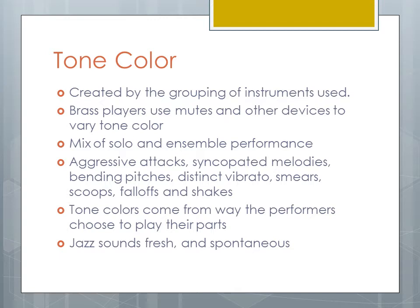Tone color in jazz was really created by the different groupings of instruments used, such as brass instruments. Jazz brass players would use devices such as mutes to vary tone color. They also would mix whether more than one player was playing at a time or whether it was a solo player. Since they mixed solo and ensemble performance so often, how many people would be playing at one time varied in every moment of a piece of jazz. This created an exciting and unpredictable tone color. Other things that dealt with tone color were the aggressive attacks and syncopated melodies used in jazz, which varied depending on the style.